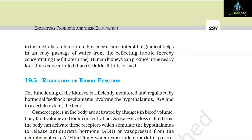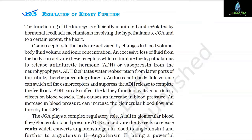Section 19.5: Regulation of Kidney Function. The function of the kidney is efficiently monitored and regulated by hormonal feedback mechanisms involving the hypothalamus, JGA, and to a certain extent the heart. Osmoreceptors in the body are activated by changes in blood volume, body fluid volume, and ionic concentration. An excessive loss of fluid from the body can activate these receptors, which stimulate the hypothalamus to release antidiuretic hormone (ADH) or vasopressin from the neurohypophysis.